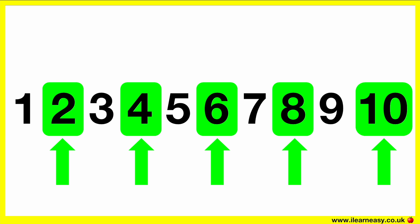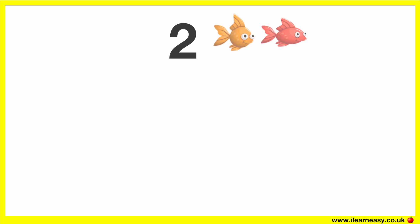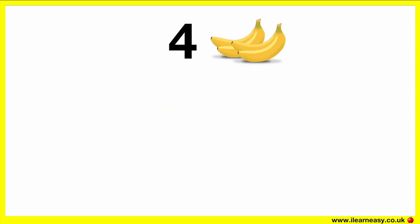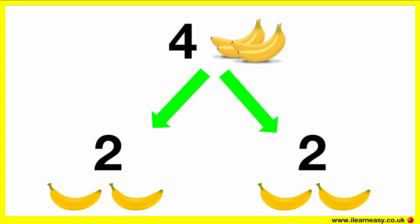An even number is a number that can be split into two equal parts. For example, the even number 2 can be split into 1 and 1. These are equal parts — they're both the same. The even number 4 can be split into 2 and 2. These are equal parts — they're both the same.